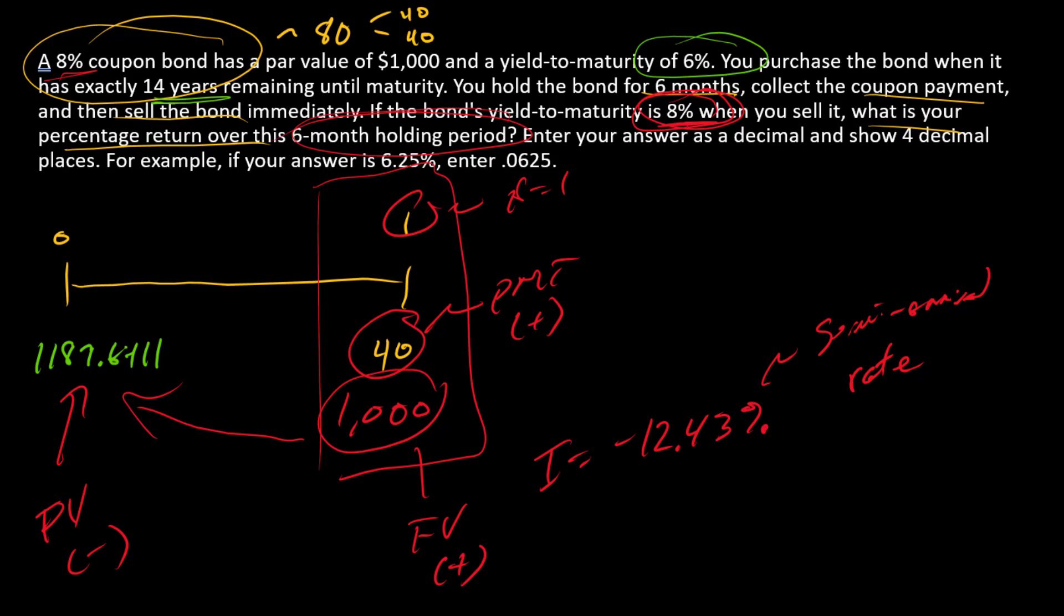Now quick note, this is only a one period problem here. But if the investor had held this bond for two, three, four, five, six periods or whatever, the steps would be exactly the same. The timeline would just be a little bit longer and this N would be something greater than one.